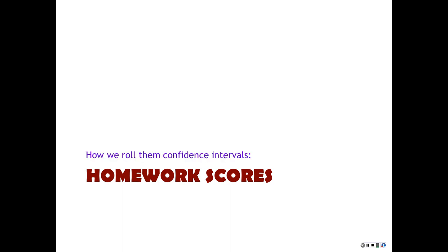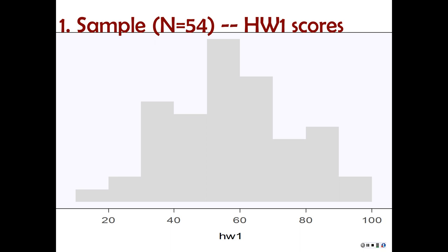Let's look at some homework scores from a previous course that I taught. A sample of 54 students, and we scored the homework on a scale from 0 to 100. You can see a few people did very poorly — they got below 20%. Some people got up to 100%. The standard deviation is 18.9, and the mean is 57.2 for our sample.